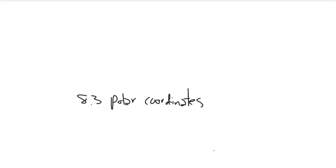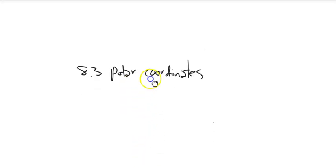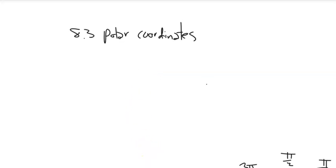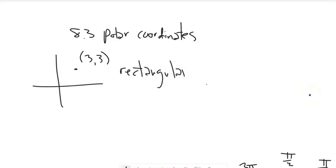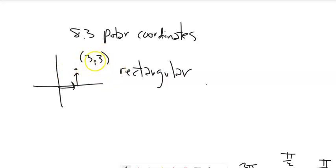Polar coordinates are just a way to talk about a position in space. We're really familiar with rectangular coordinates, also called Cartesian coordinates. If I talk about the point (3, 3) in rectangular, we're centered at the origin (0, 0) and then we go over 3 and up 3. These are called rectangular coordinates because you travel in a rectangle — you go over and up, and if you go back and down, it makes a rectangle.